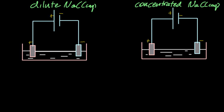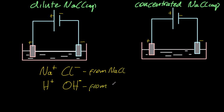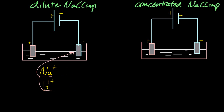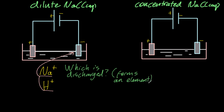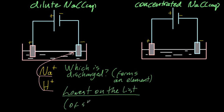Let's start with dilute sodium chloride. Each time you have to write down the ions that are present — those from the ionic compound dissolved, and H⁺ and OH⁻ from the water. Looking at the positive ions, they're attracted to the negative electrode by electrostatic attraction. To decide which one is discharged, you look at the standard electrode potential list. The lowest on the list is discharged — remember that.